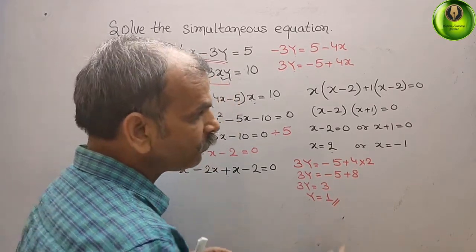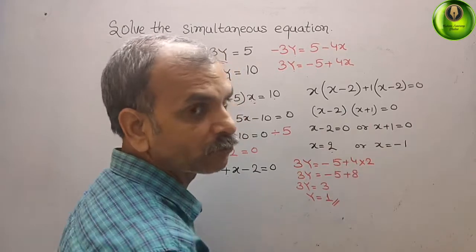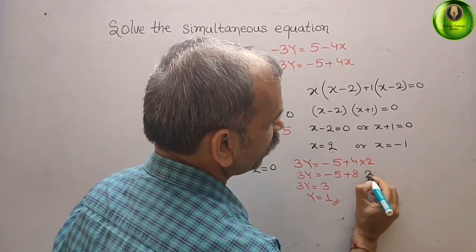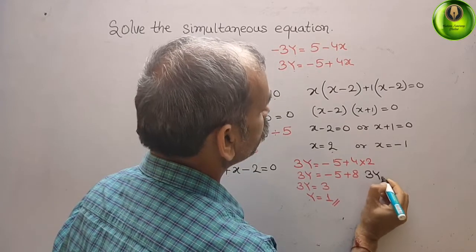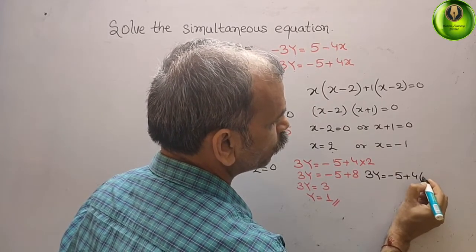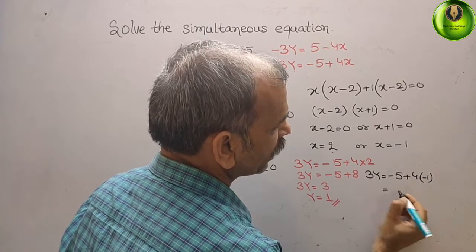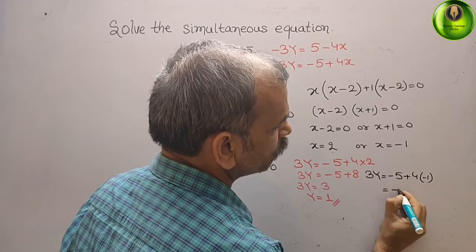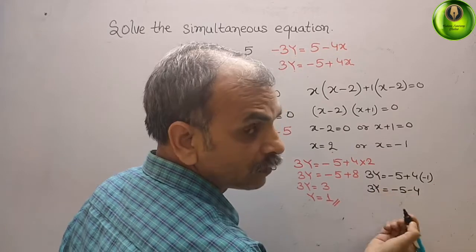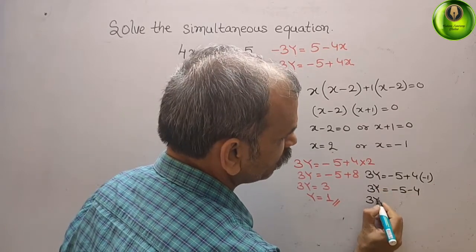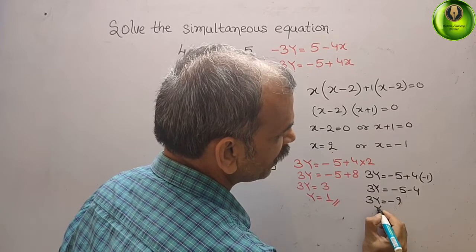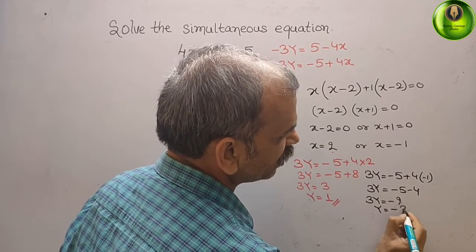Now taking x equals minus 1: 3y equals minus 5 plus 4 times minus 1, which is minus 5 minus 4, so 3y equals minus 9, therefore y equals minus 3.